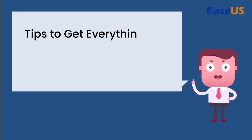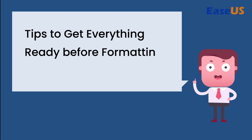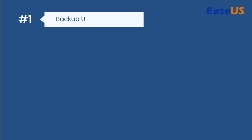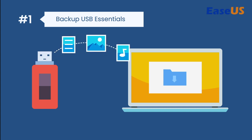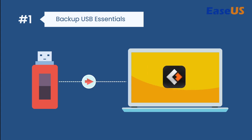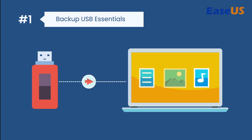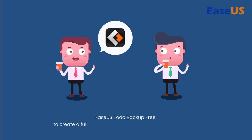Here are some tips to get everything ready before formatting your USB using CMD. Number 1: Backup USB Essentials. As formatting will remove all saved data on the USB drive, if your USB is accessible, make sure to back up valuable data to another secure location in advance. You can manually copy files from USB to another device or use automated free file backup software to create a full backup at one time.